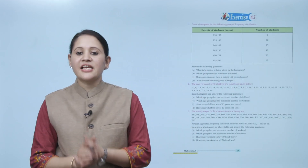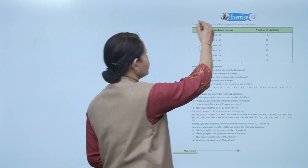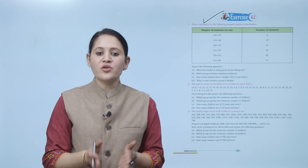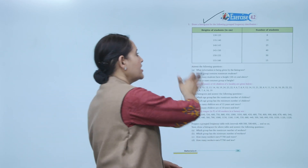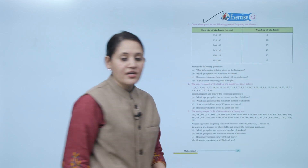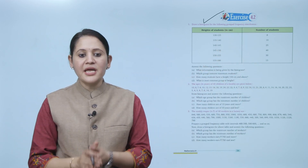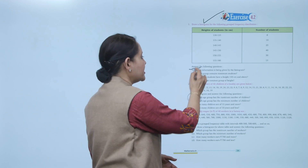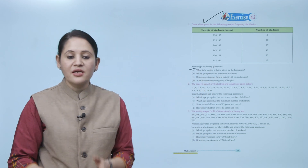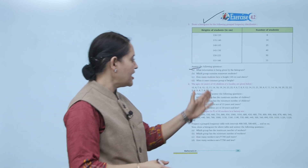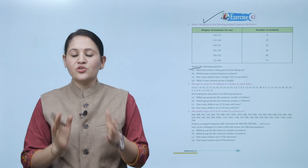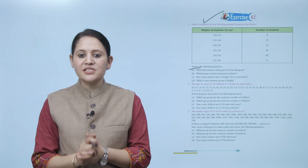Exercise 4.2: Draw a histogram for the following grouped frequency distribution. The height of students and number of students are given. You have to draw a histogram and answer questions like: what information is being given by the histogram? The histogram shows information about the height of students. Practice all the questions of this exercise.